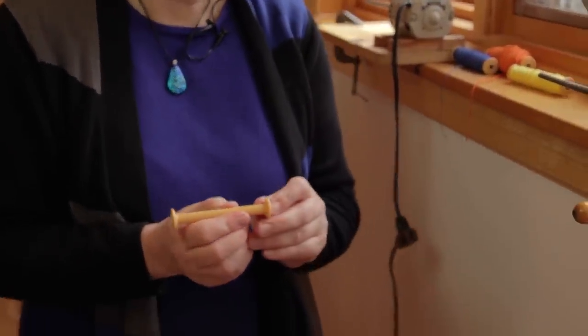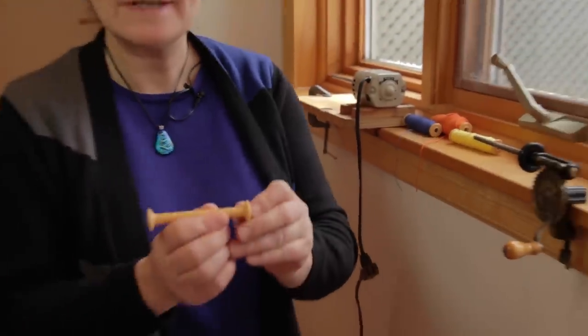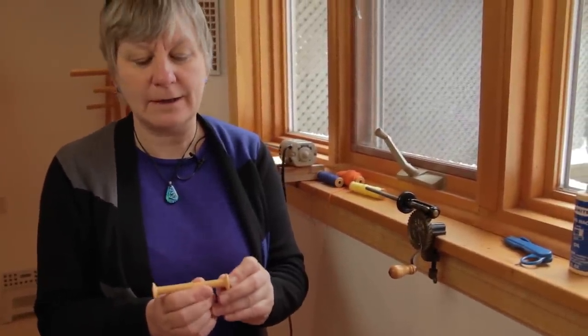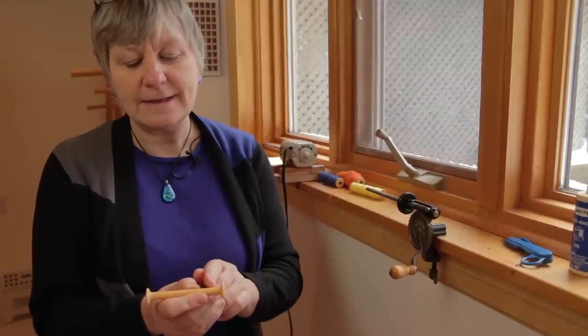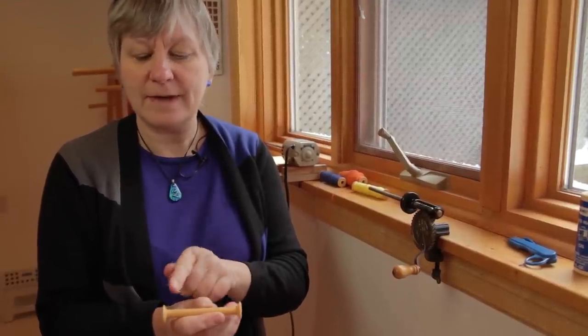The second bobbin I am going to show you is a linen bobbin. Linen has no stretch at all in it. So it is very important to wind a very solid bobbin for your linen yarn. The other thing is that in the cotton bobbin we actually wound up the ends by the flanges first and then filled in the center.